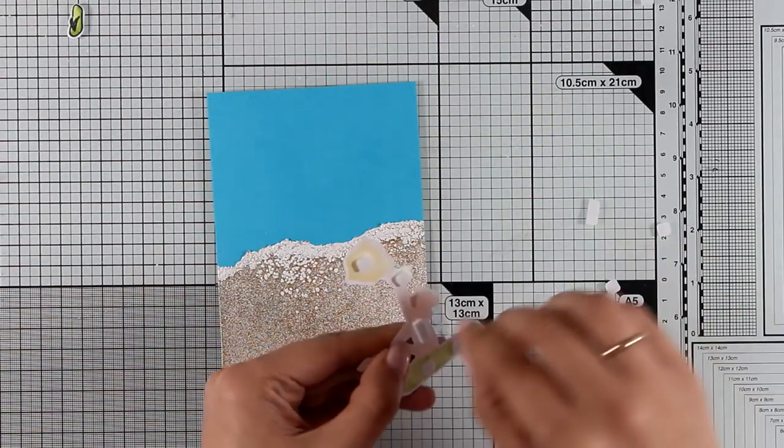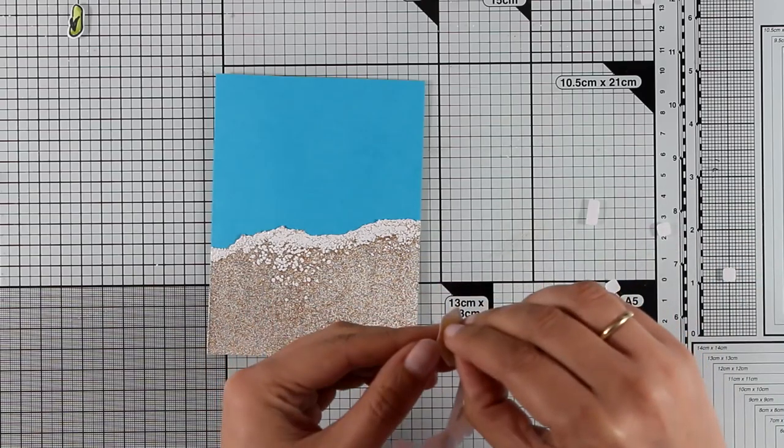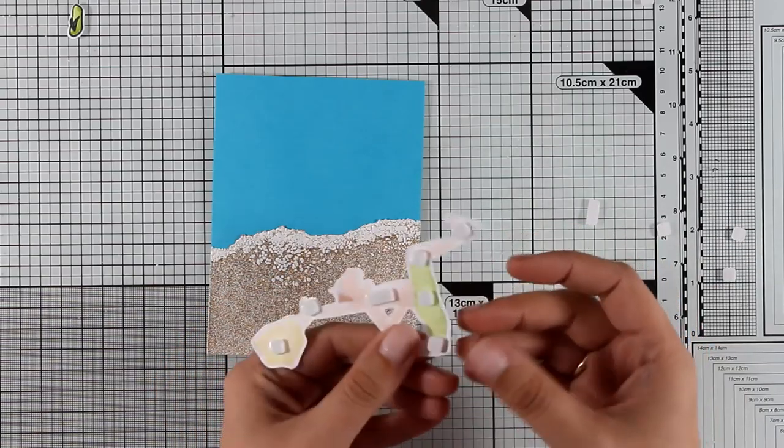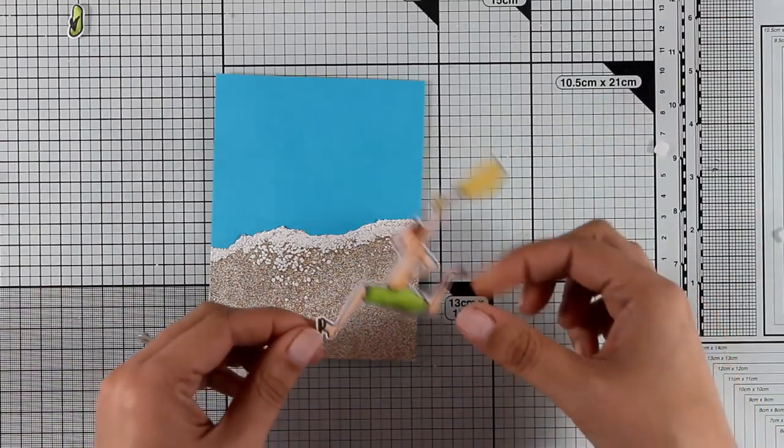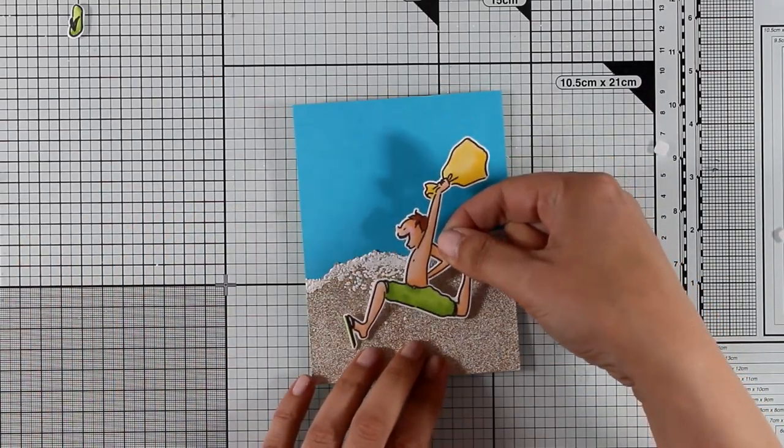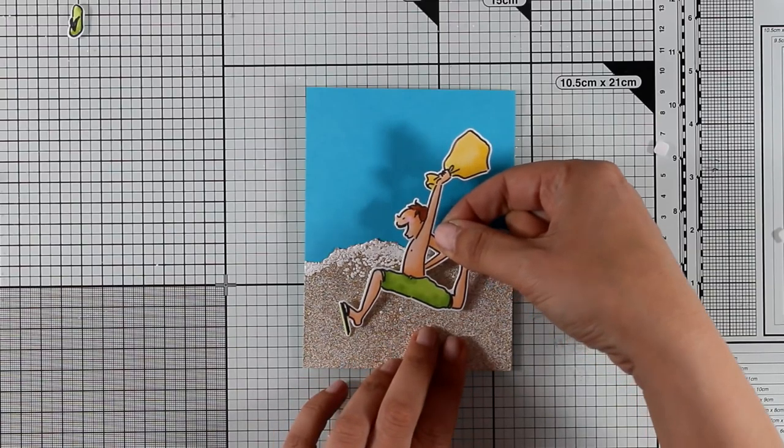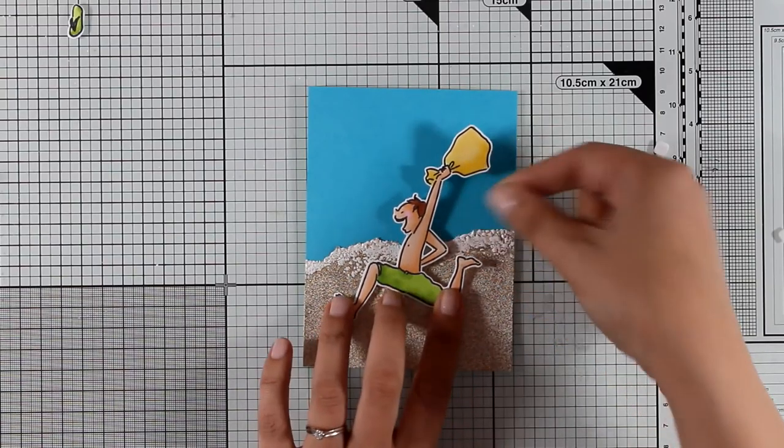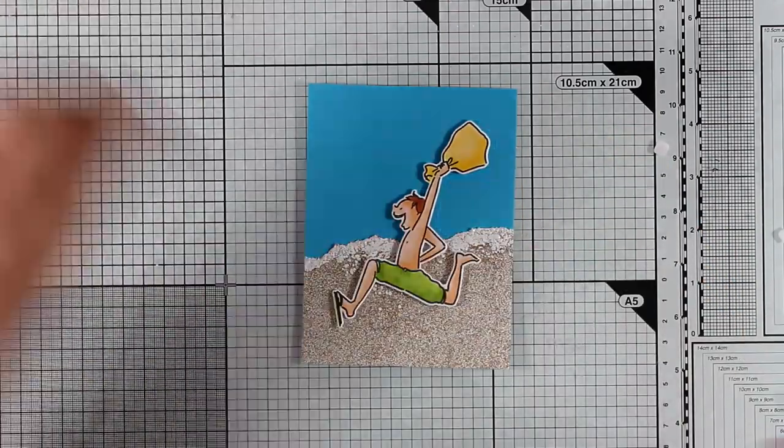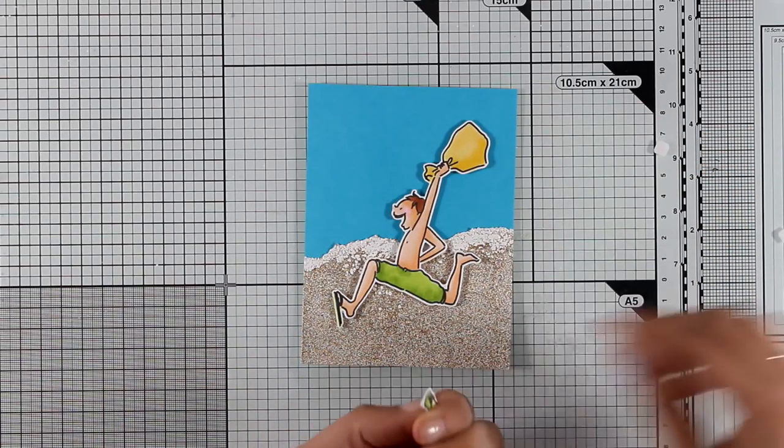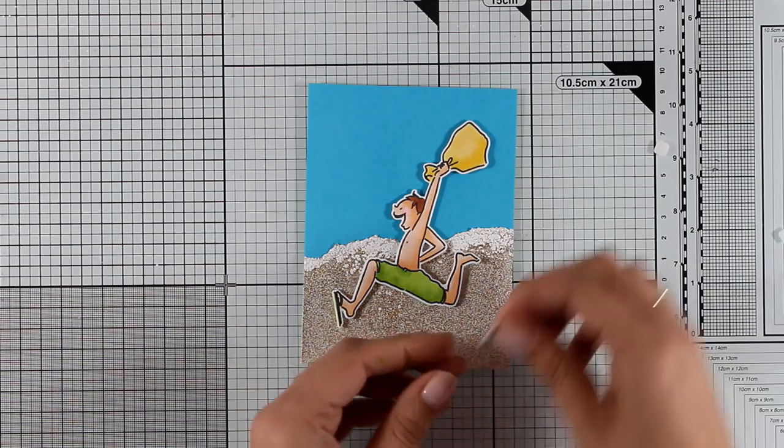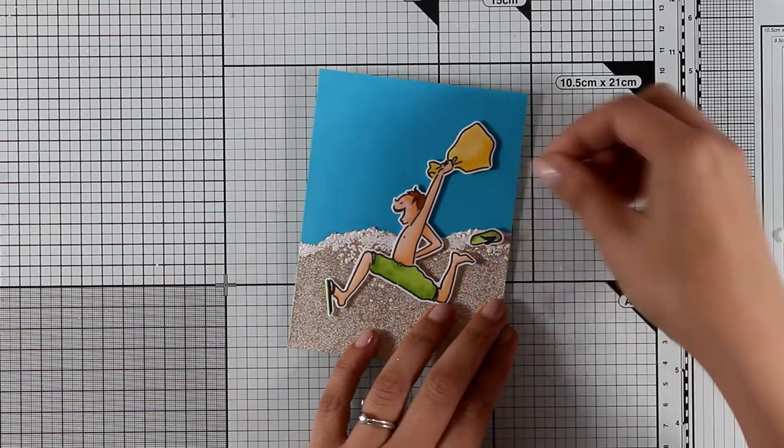I used foam squares at the back of my guy so that I can pop him on my card. I'm going to place him on the card so that I leave enough space for my sentiment as well as enough space to stick the loose flip-flop, which I think is hilarious. I'm going to play around with the flip-flop now to decide where this is going to go.